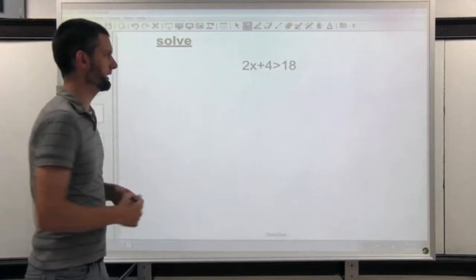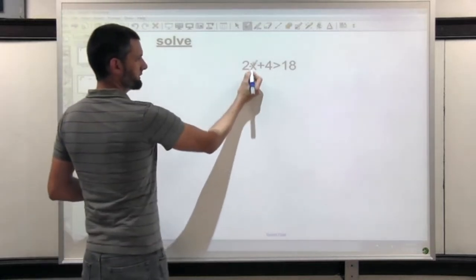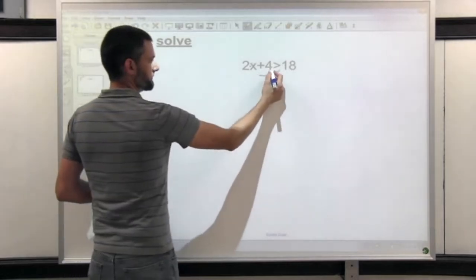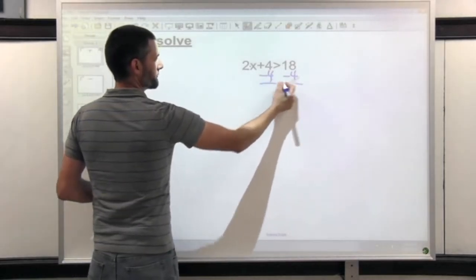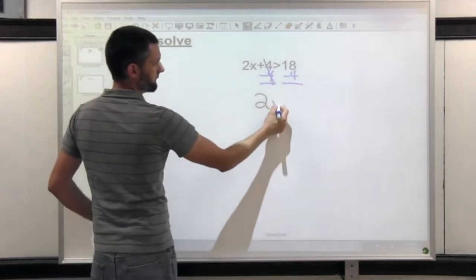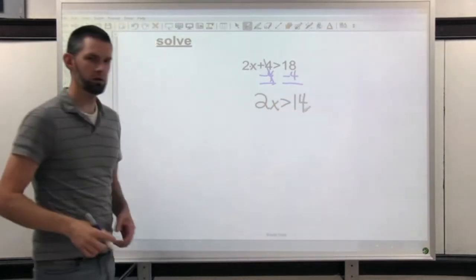We still approach it the same way. We look for things that we need to get rid of: a multiply by 2 and an adding 4. Let's get rid of the adding first. So we'd subtract from both sides, leaving us with 2x greater than 14.